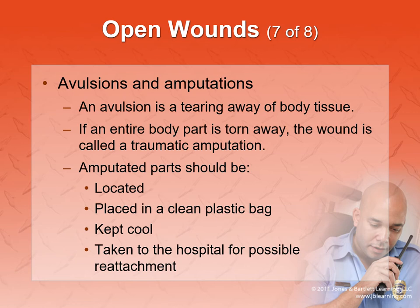For an amputation — when the limb is entirely separated — apply a tourniquet right away to stop the bleeding as quickly as possible. However, keep the amputated part. With advancements in technology, it may be possible to reattach a limb depending on various factors. If you can find the amputated part, bring it with you. Keep it in a clean plastic bag and keep it cool — not on ice necessarily, because you could have frostbite in an amputated limb — just cool and take it to the hospital.